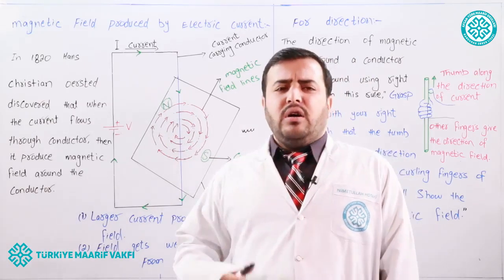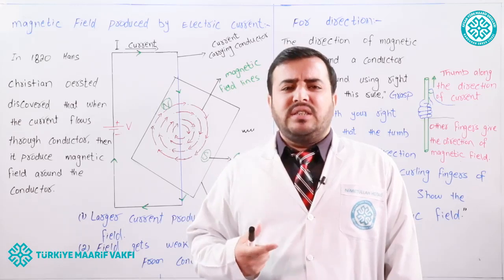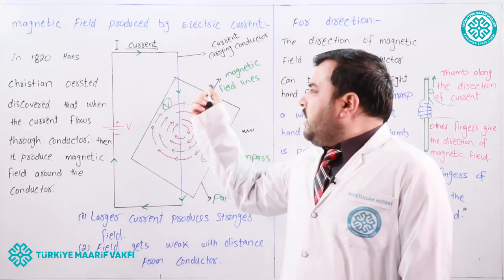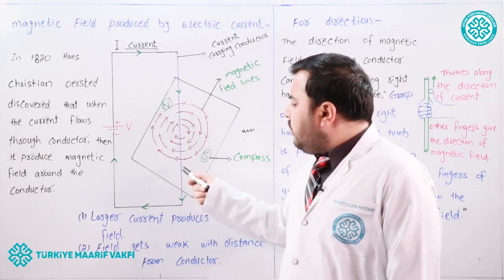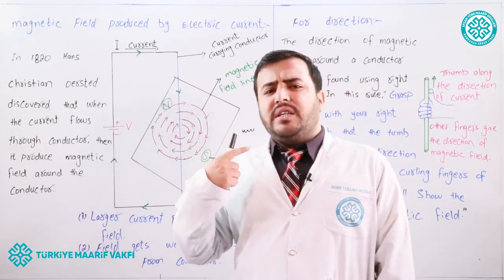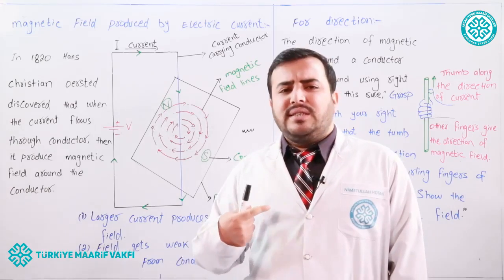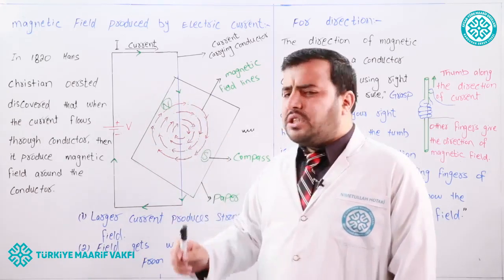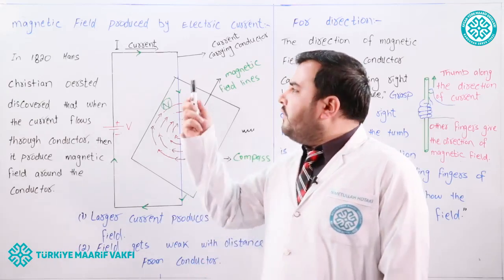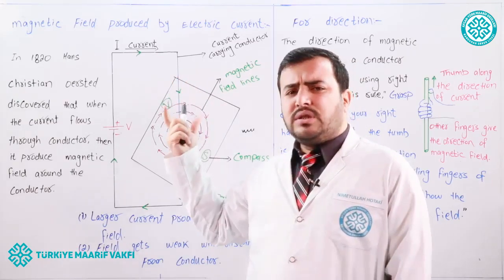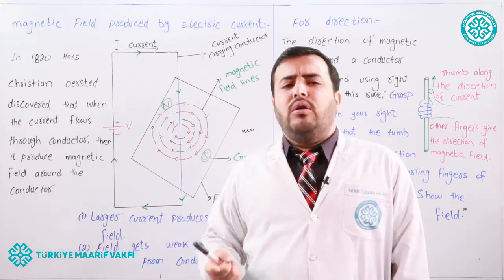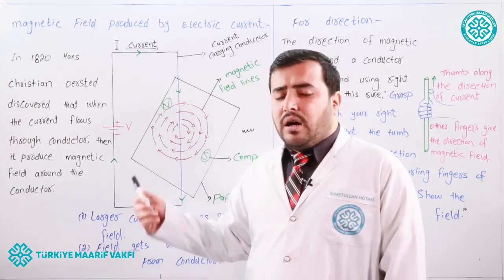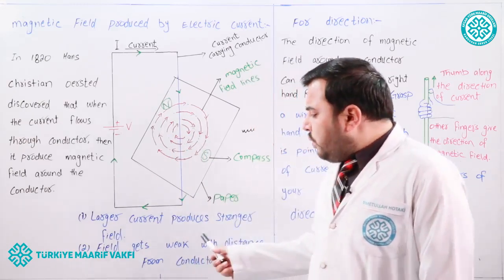From his experiment, the following results were obtained. The first result was that when a large amount of current flows through a conductor, the magnetic field will be stronger — a stronger magnetic field is produced around the conducting wire. If a small amount of current flows through the wire, then a weaker magnetic field will be produced around the conducting wire.